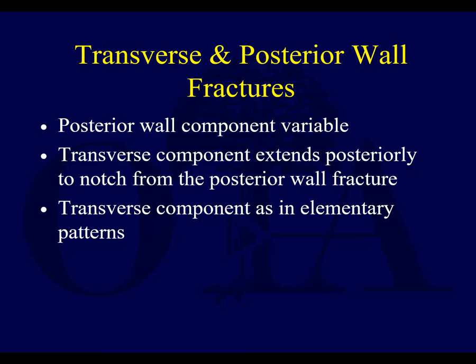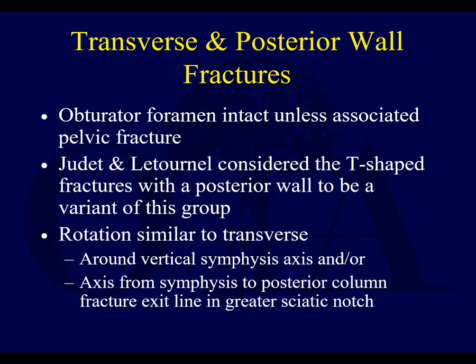The transverse and posterior wall fracture is actually a pretty common fracture type — fairly common in Letournel's series. The posterior wall component is variable, but the fact that you have a posterior wall means you almost always have to approach these posteriorly. The transverse component extends posteriorly to the notch from the posterior wall fracture. The transverse component itself is just like it is with elementary fracture patterns — it could be juxtatectal, infratectal, or transtectal. As opposed to the T-shaped fracture, the obturator foramen is typically intact. You can also have a T-shaped fracture with a posterior wall, which is kind of a variant of the transverse posterior wall.